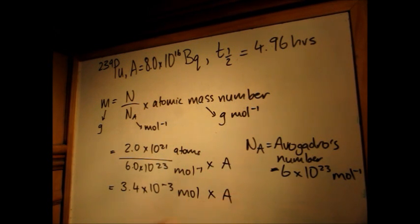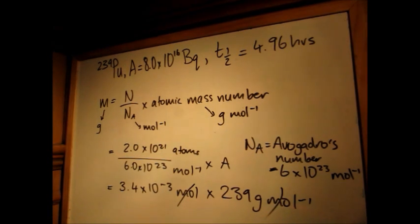Then we multiply this by the atomic mass number, which we get from the symbol of plutonium in the question, 239 grams per mole. Finally, this gives us an answer after canceling out of 0.82 grams.